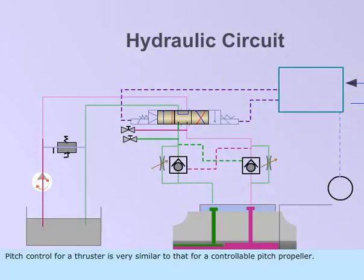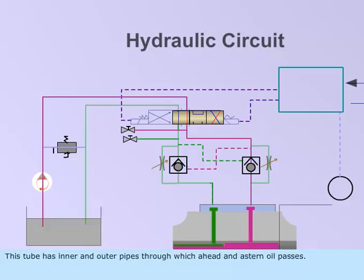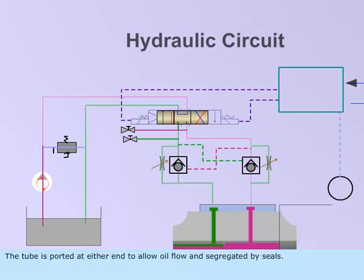Pitch control for a thruster is very similar to that for a controllable pitch propeller. This tube has inner and outer pipes through which a head and a stern oil passes. The tube is ported at either end to allow oil flow and segregated by seals.